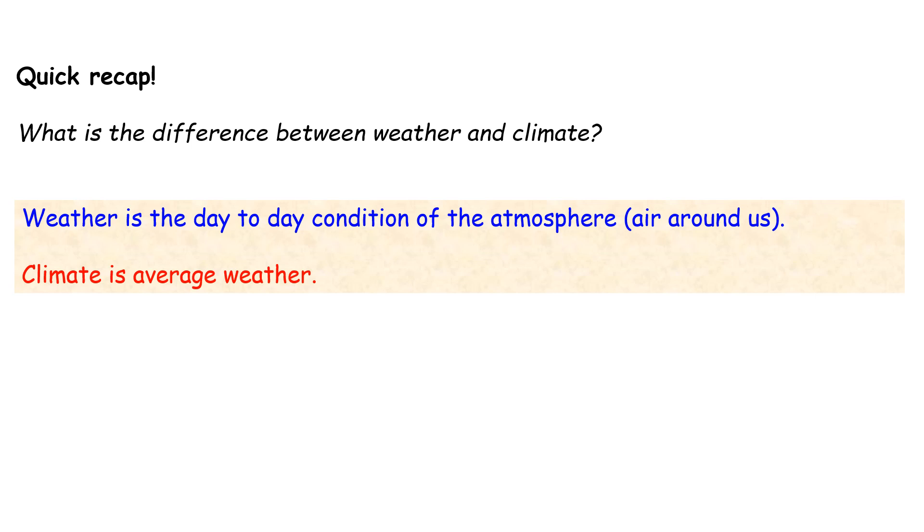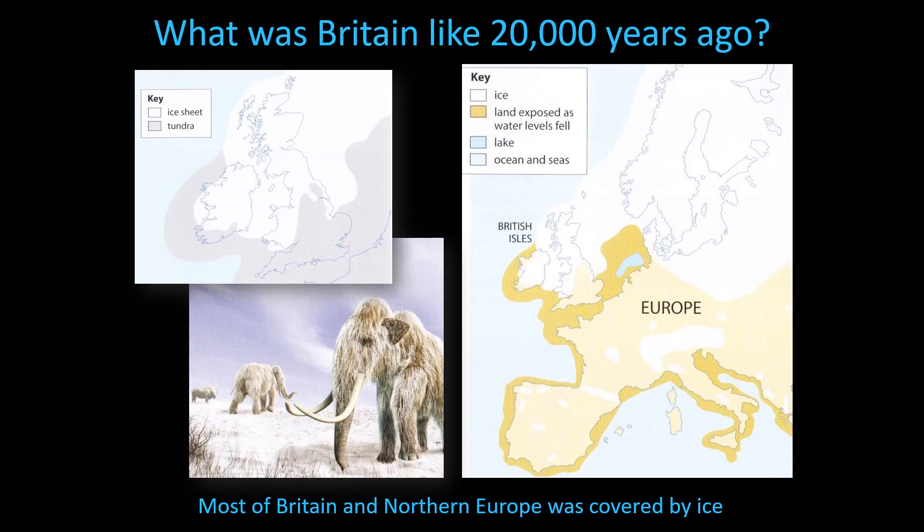This topic is called changing climate. We're going to be seeing how the average weather changes over years and years. If we have a glance at this slide, we can see that Britain had a very different climate in the past. If you go back 20,000 years ago to the end of the last ice age, we had woolly mammoths within our country and also saber-toothed tigers. This proves that Britain's climate is continually changing.